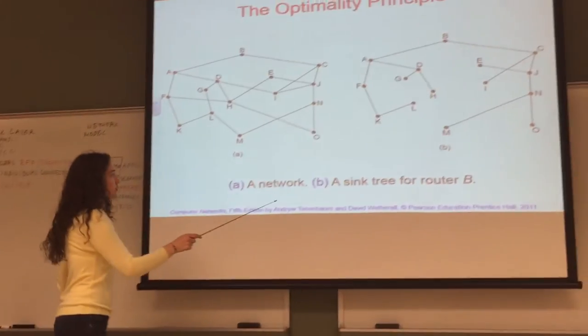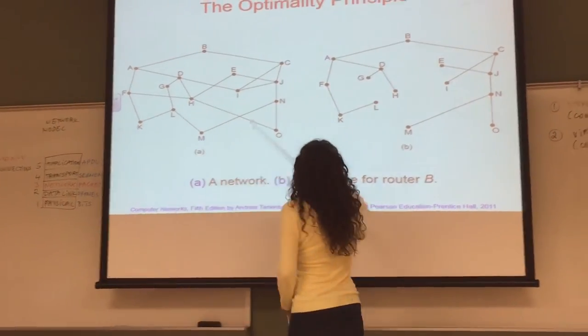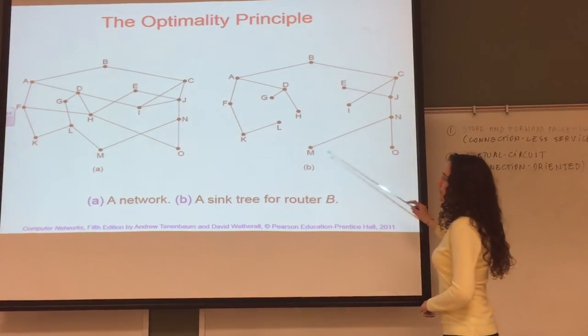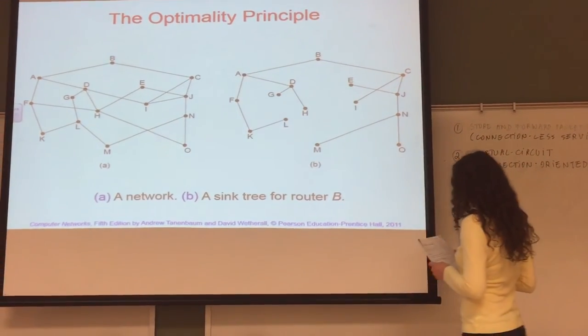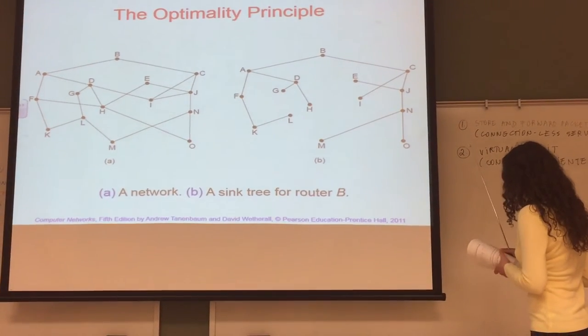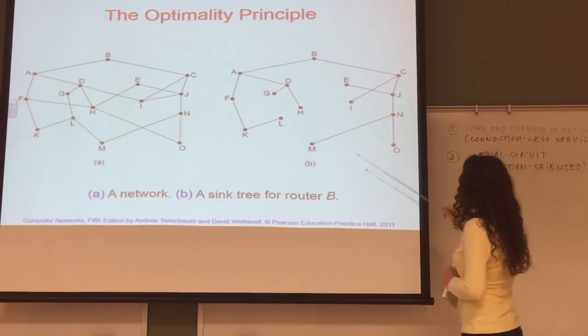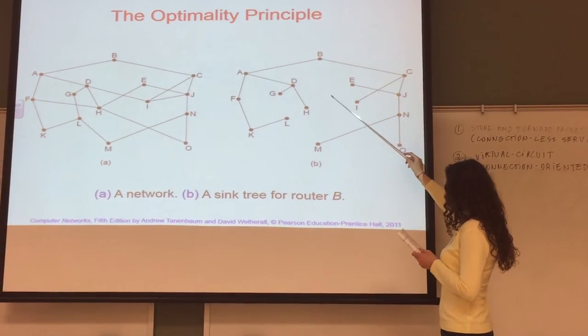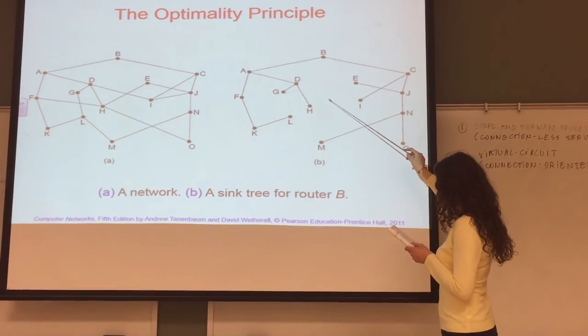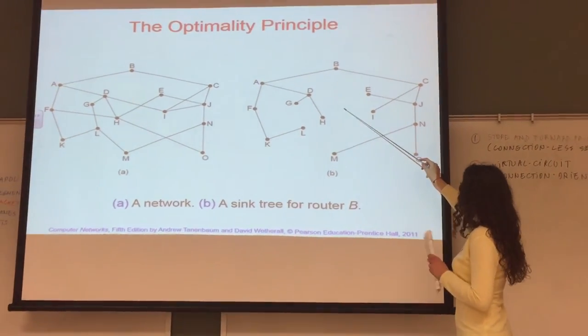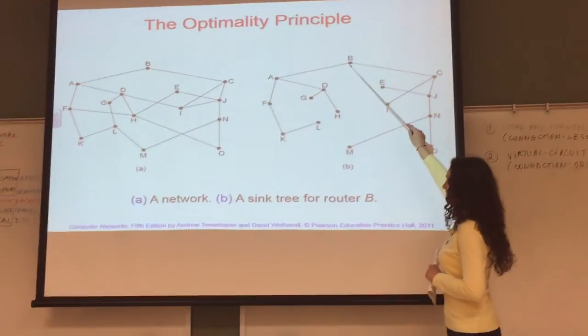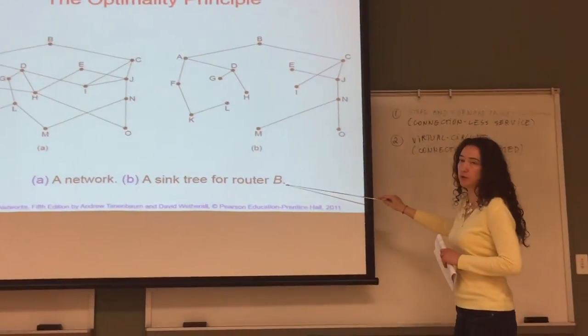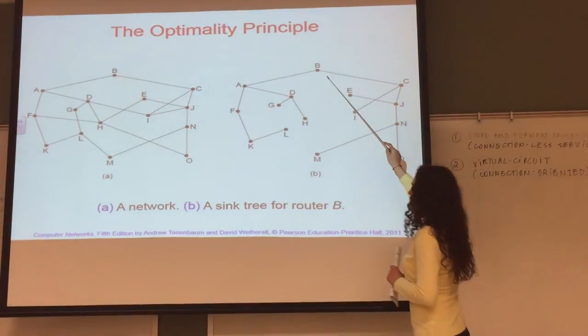The next picture shows a sink tree. If we follow this principle, we can build such a tree for the entire network. The sink tree shows the set of all optimal routes from all sources to a given destination. The root of the tree is the destination. This is the sink tree for destination B—that is the root.